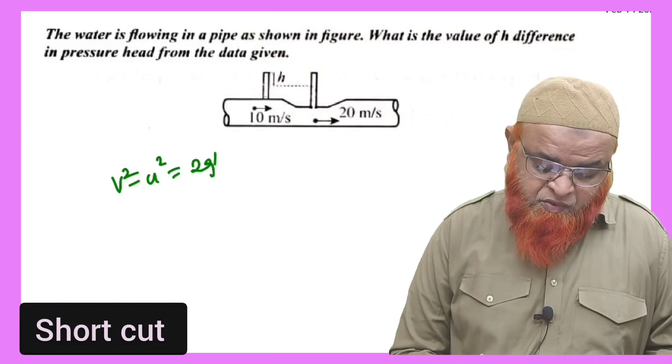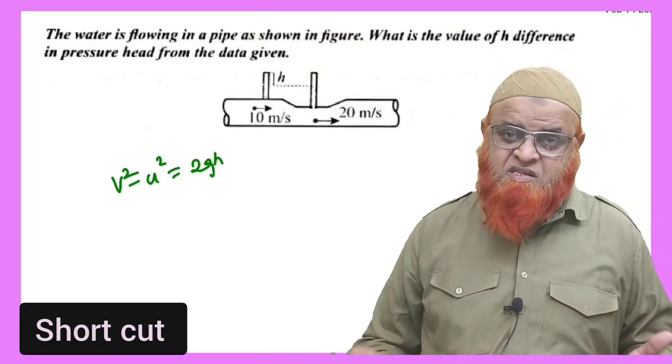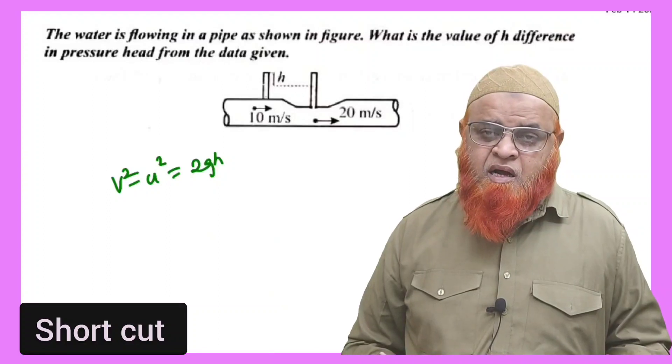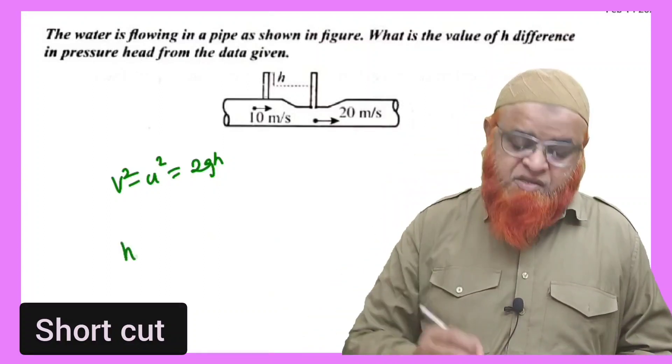So here, v² - u² = 2gh. This is a shortcut formula where you can avoid Bernoulli's theorem.